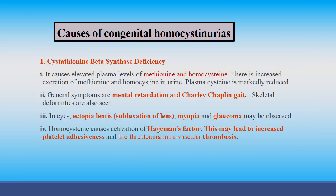If homocysteine level in blood is increased, there is a risk of coronary artery disease. The cause of congenital homocysteinuria is cystathionine beta-synthase deficiency, which increases levels of methionine and homocysteine. There is increased excretion of methionine and homocysteine in urine, and plasma cysteine level is reduced.